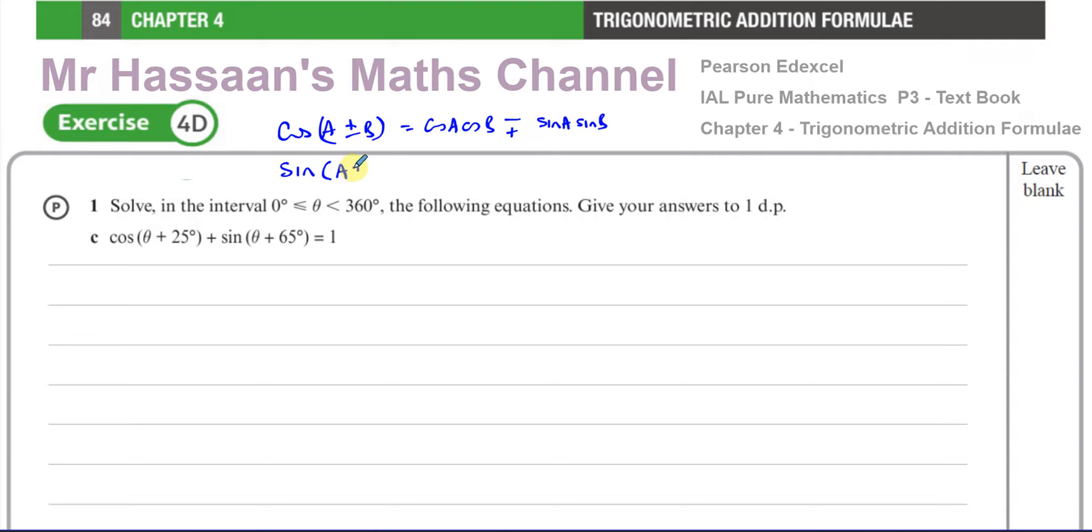For sin(a + b), from the formula book this is sin of the first angle times cos of the second angle. If it's a plus, it's a plus here as well, then you have cos of the first angle times sin of the second angle. It's the other way around. If there's a minus, there's a minus.